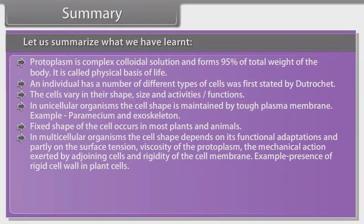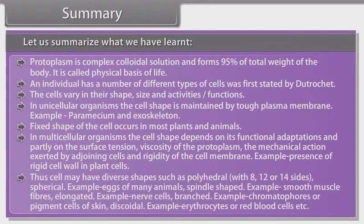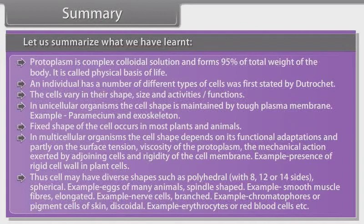Cell shape also depends on the mechanical action exerted by adjoining cells and rigidity of the cell membrane — for example, the presence of a rigid cell wall in plant cells. Thus, cells may have diverse shapes such as polyhedral with 8, 12 or 14 sides; spherical, for example eggs of many animals; spindle-shaped, for example smooth muscle fibers; elongated, for example nerve cells; branched, for example chromatophores or pigment cells of skin; and discoidal, for example erythrocytes or red blood cells.